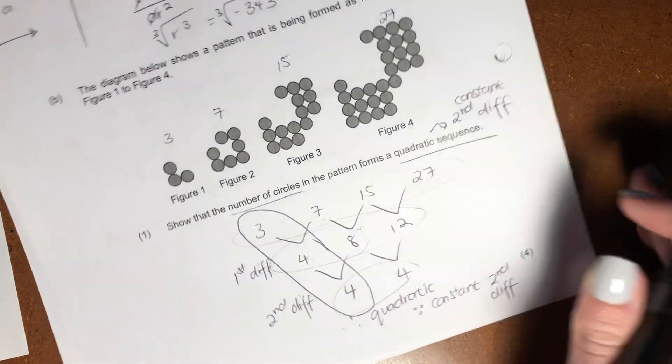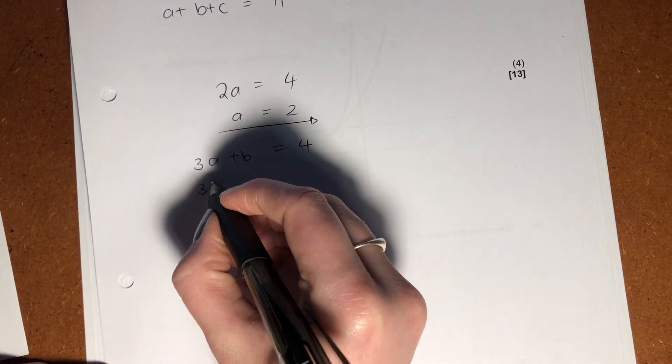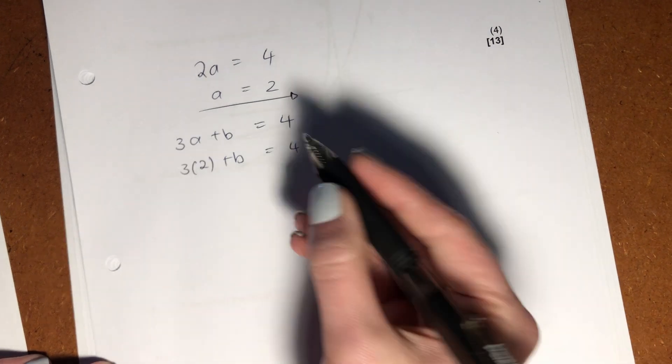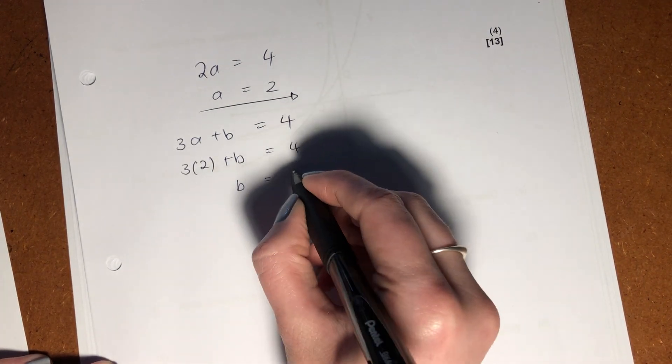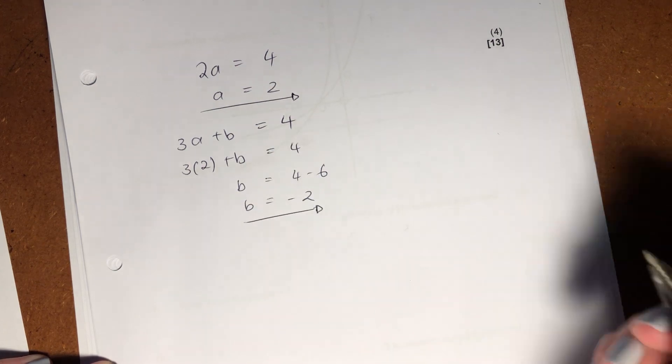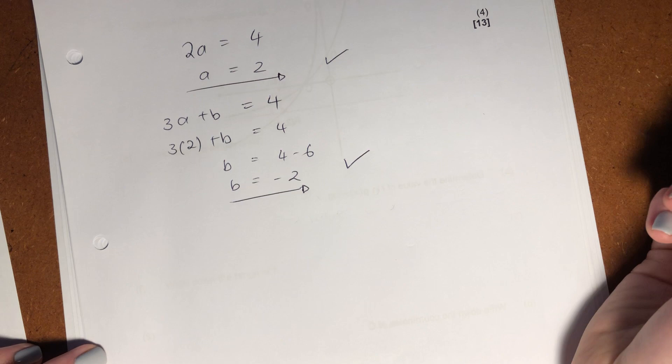So, over here, this would equal 4. We know what A equals, so sub that in. Right? Now, just solve for that. So, B is going to be 4 minus 6. So, B is going to be negative 2. Okay? So, now we've got A, and we've got B. We just have to find C.